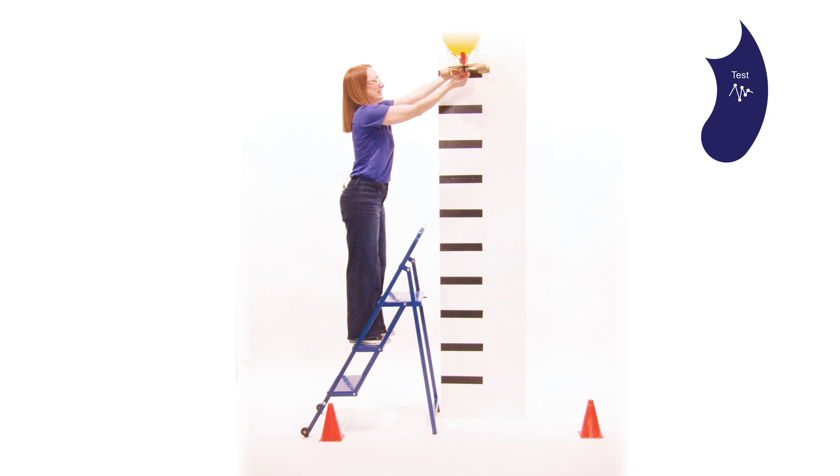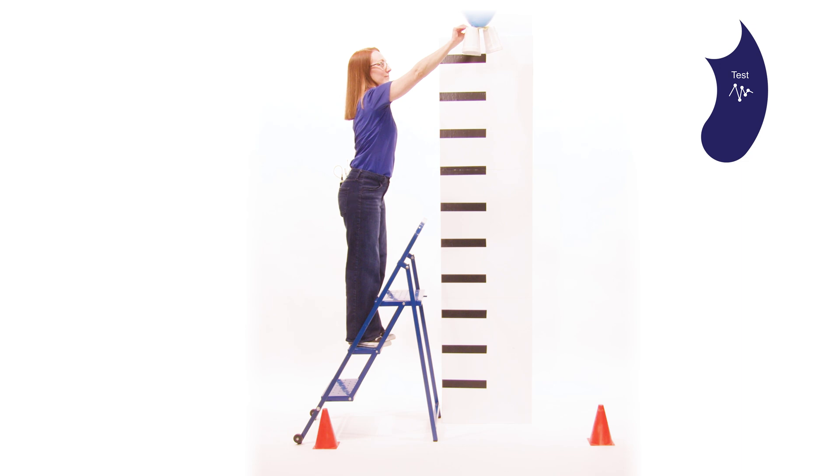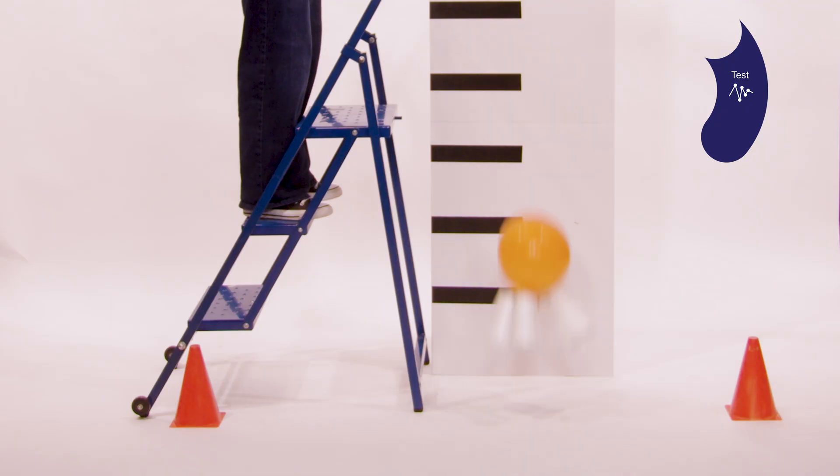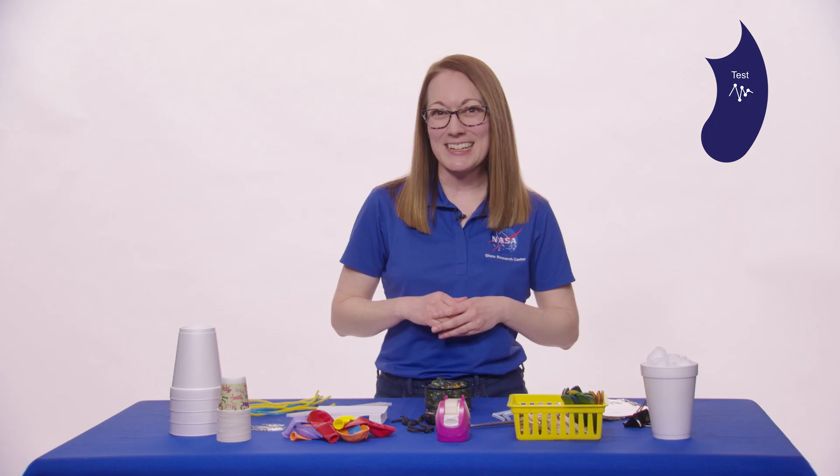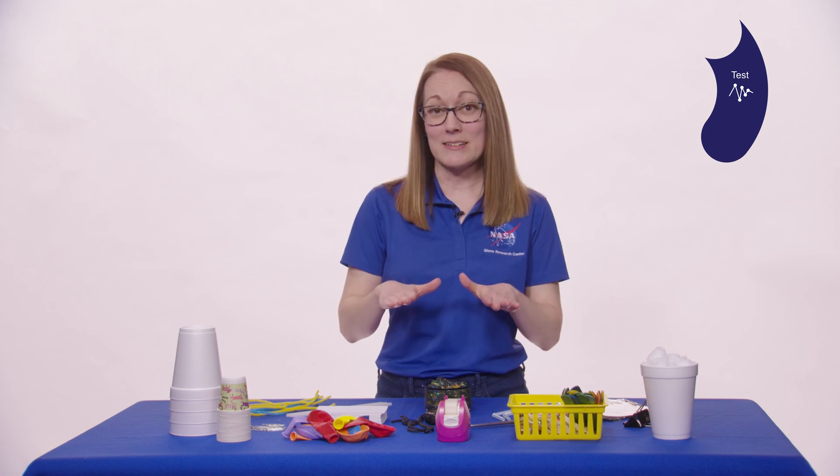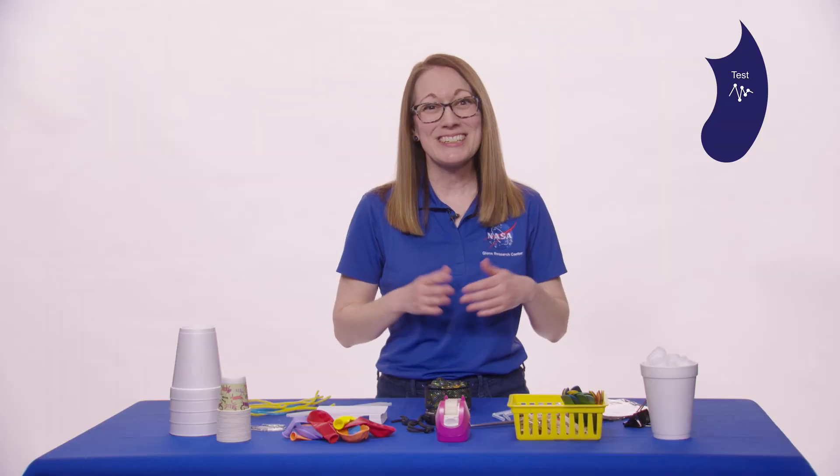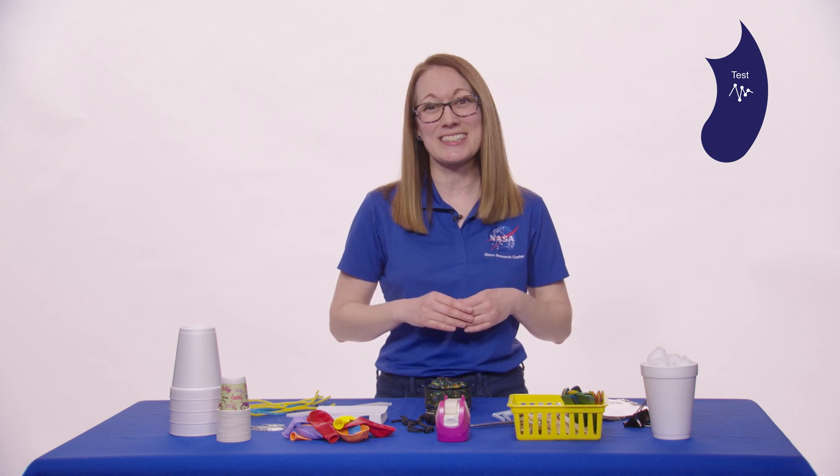Test. Students will evaluate their solutions by dropping their landers from a height of two meters in a series of trials. First without propulsion to get a baseline, then with propulsion to compare. They will collect and graph data of their lander's descent. To collect data use a stopwatch and or software on a phone or computer to record the descent of your student's landers.